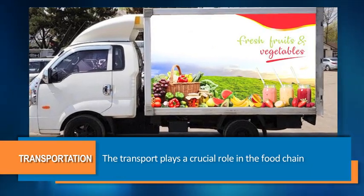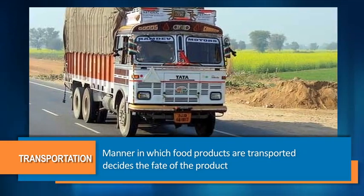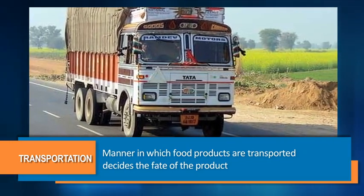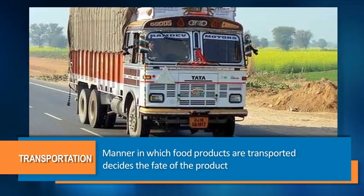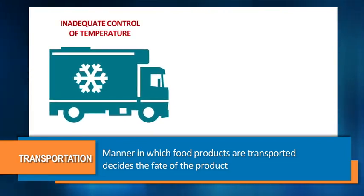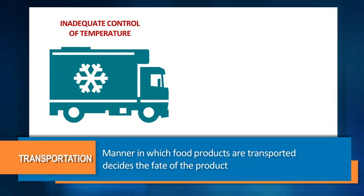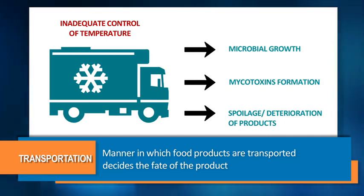Transport plays a crucial role in the food chain. The manner in which food products are transported decides the fate of the product reaching its intended customers or consumers. For example, inadequate control of temperatures during transportation and distribution can contribute to microbial growth, formation of mycotoxins, spoilage and deterioration of certain products.